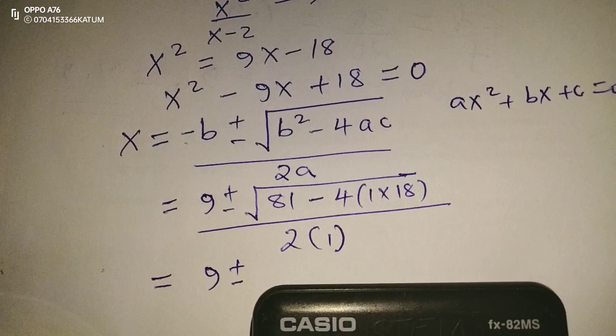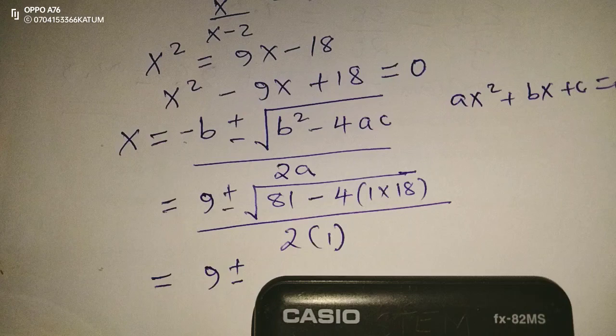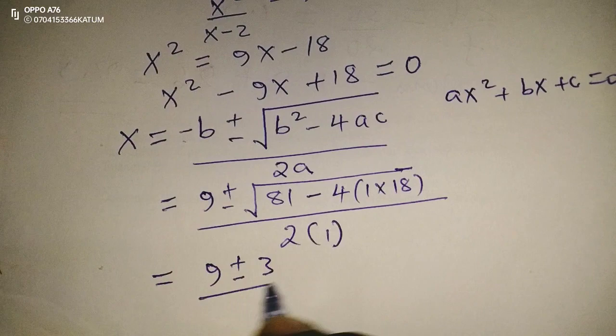So 81 minus 72 gives us 9. So the square root of 9 is either plus or minus 3, then we divide by 2.